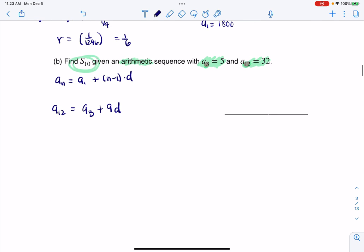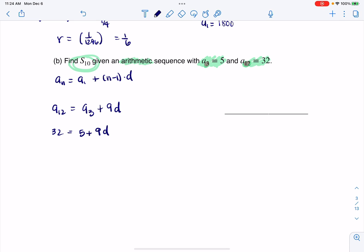And I'm using difference because we have arithmetic sequences in this case. So we've got 32, that's going to be equal to five plus nine D. And when I start to solve that, I'm going to get nine D is equal to 27, and that's going to tell me D is equal to three. Great.